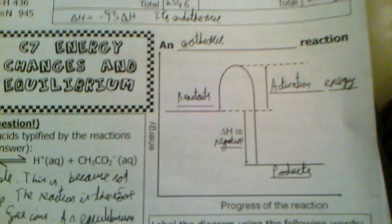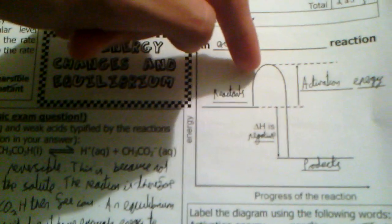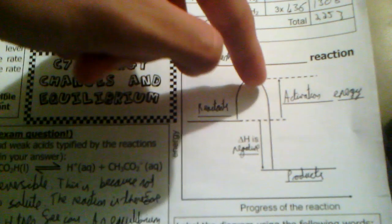So, that graph basically represents what happens in an exothermic reaction. Because energy is lost. But, you still need an activation energy to make the reaction happen at all. Otherwise, everything will be reacting with each other.